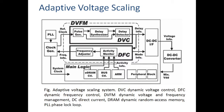It calculates how much delay will happen in the critical path — the critical path covers the entire operating circuitry. Dynamic voltage scaling calculates the delay, and according to that delay, it generates a signal to the DC-to-DC converter. According to the signal, a particular voltage is generated, and that voltage is given to the main logic.